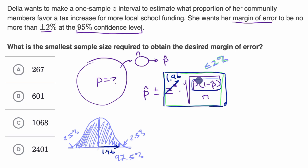What we could do is pick a sample proportion that maximizes this. Because if we maximize this, we know we're essentially figuring out the largest thing this could end up being, and then we'll be safe.